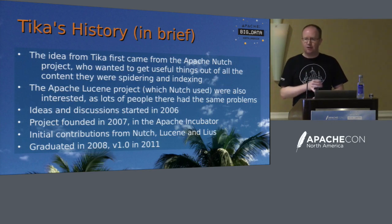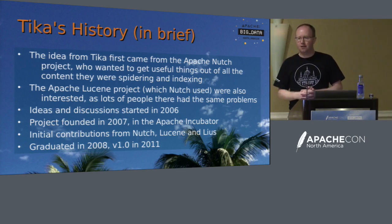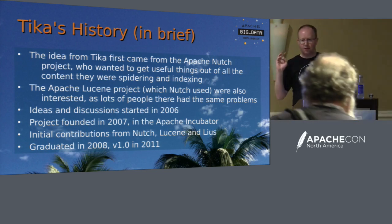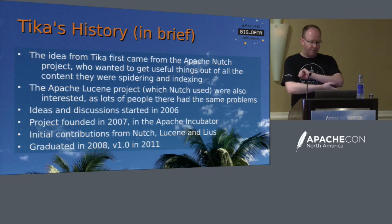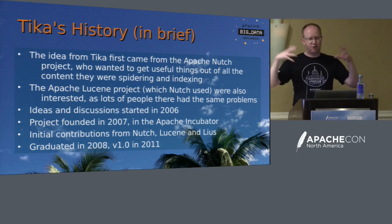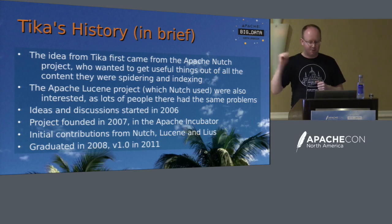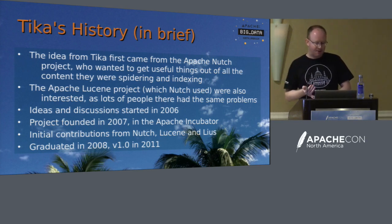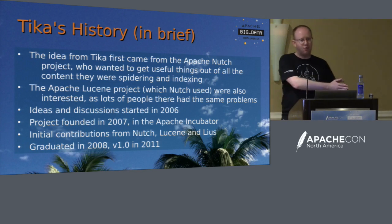The Apache Nutch project, who were trying to do web-scale indexing and searching and who also went on to invent Hadoop, were just as fed up as everyone else with this state of affairs. They teamed up with the Apache Lucene group and took a lot of these snippets of random code and a bit of code from another project called Lewis, and produced Tika as a way of hiding that complexity. The project was founded in 2007, went into the incubator, graduated in 2008, version 1 in 2011, and we're now in 2017 — six years later.